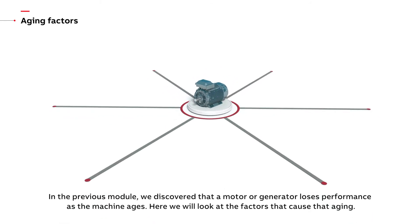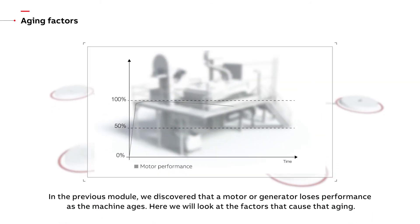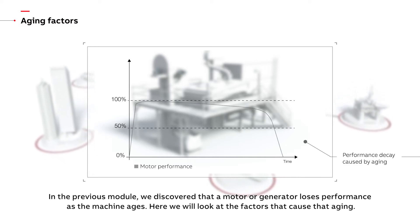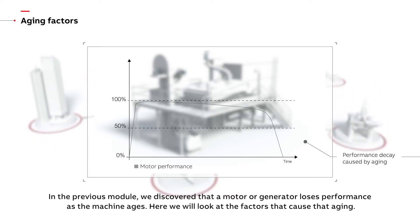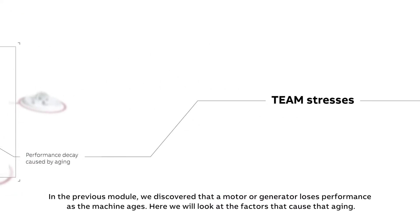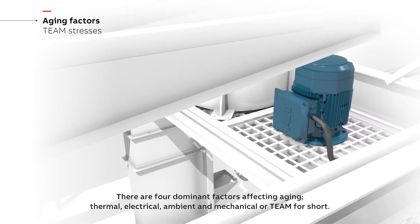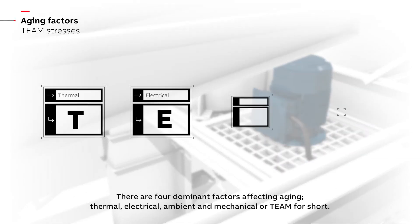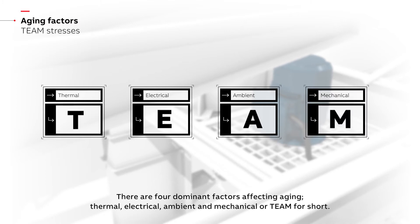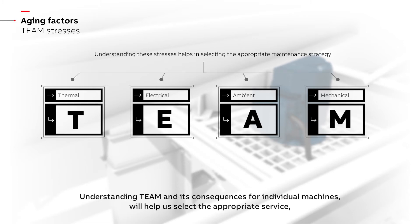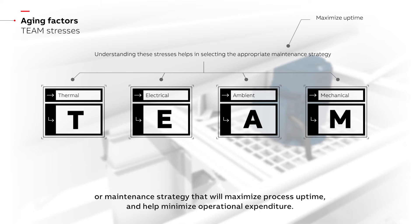In the previous module we discovered that a motor or generator loses performance as the machine ages. Here we will look at the factors that cause that aging. There are four dominant factors affecting aging: thermal, electrical, ambient, and mechanical — or TEAM for short. Understanding TEAM and its consequences for individual machines will help us select the appropriate service or maintenance strategy that will maximize process uptime and help minimize operational expenditure.